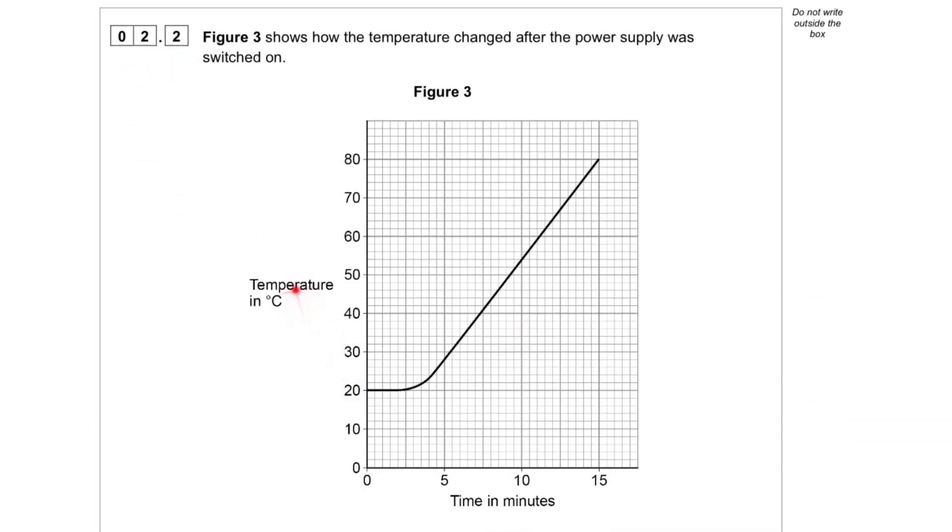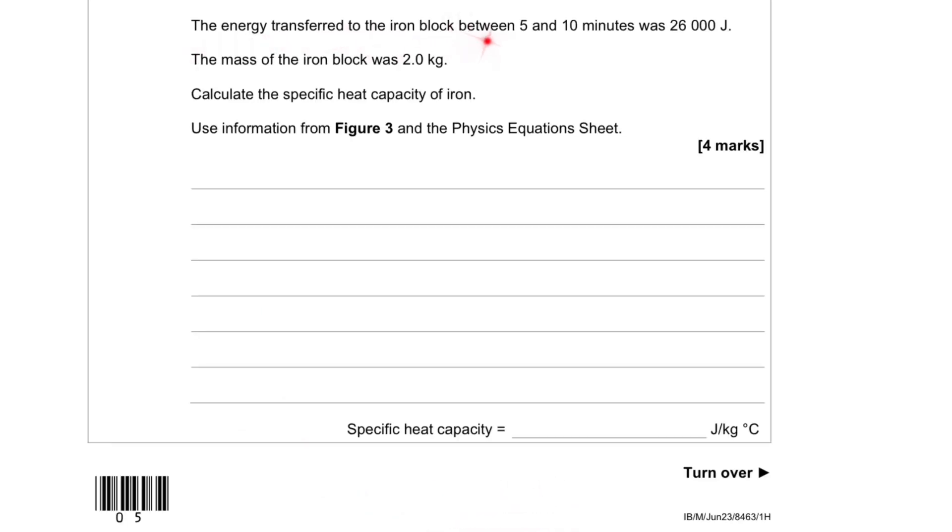Here's a graph of temperature against the time in minutes. The energy transfer to the iron block between 5 and 10 minutes was 26,000 joules. The mass of the iron block was 2 kilograms. Calculate the specific heat capacity of iron.